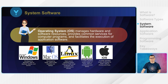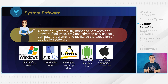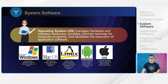The operating system is a type of system software that manages the computer's hardware and software resources. It provides common services for computer programs and facilitates the execution of application software. Popular examples include Windows, Mac, Linux, Android, and iOS.